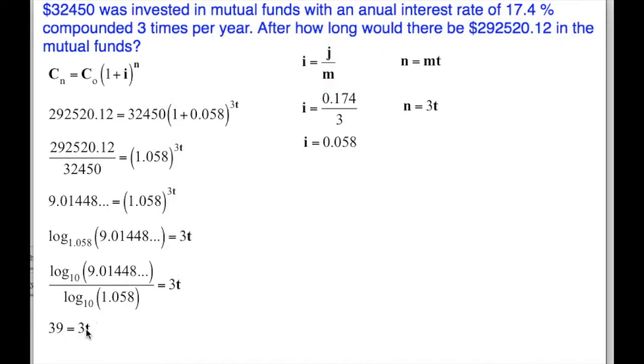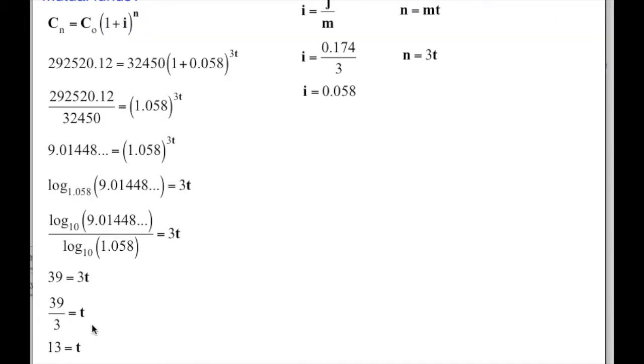39 is equal to 3t. I want to get my t alone. The 3 is multiplying the t, so I'm going to divide both sides by 3. And that is going to give me 13. 13 years. There would be $292,520.12 after 13 years. 13 years is our answer.